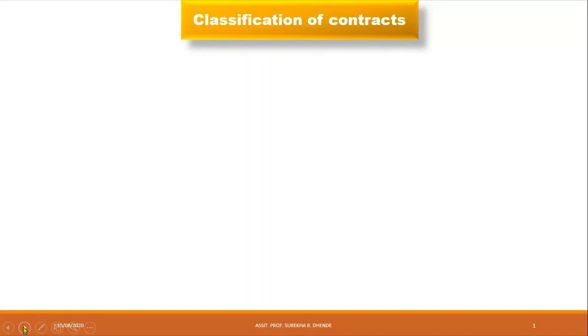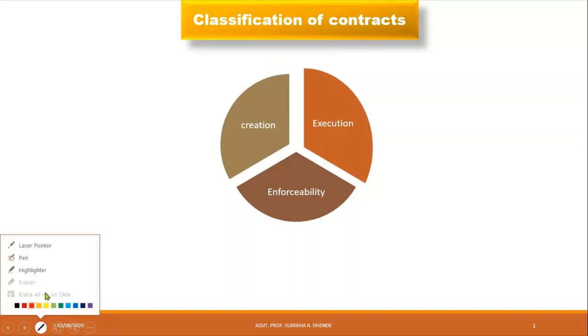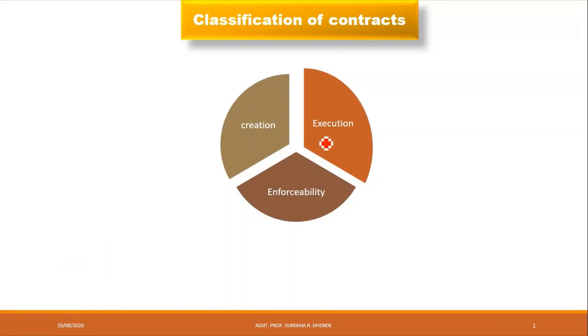Next topic: Classification of Contracts. Contracts are classified under three headings: classification on the basis of execution, then enforceability, and creation.